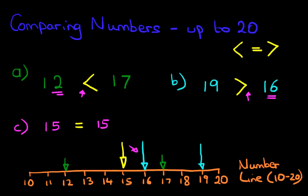And that is how we compare numbers up to 20 using the number line. Always, always remember, the arrow is pointing to the smaller number.